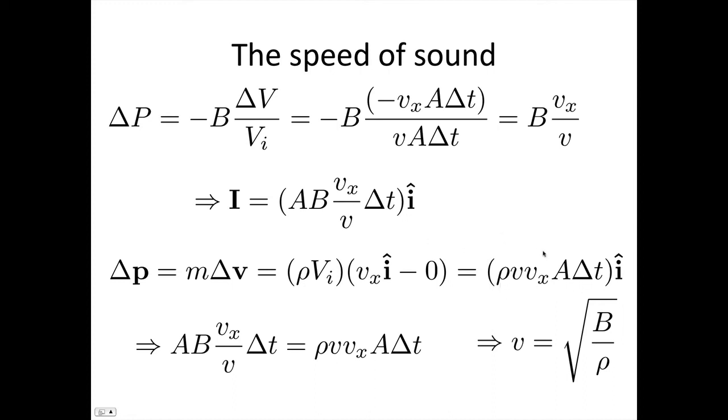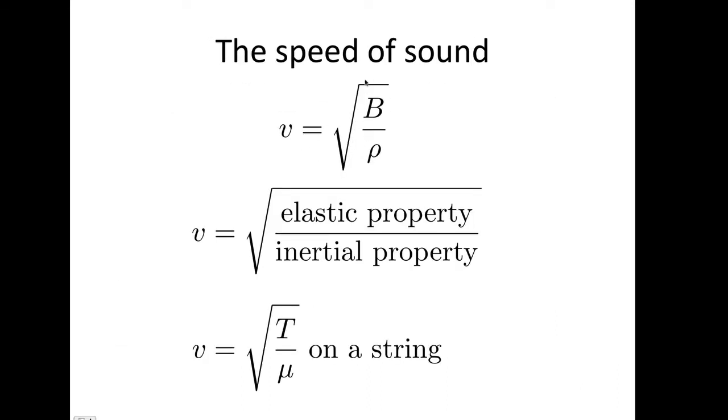So now what we can do is just equate these two because of impulse. So we've got AB Vx on V delta T is equal to rho V Vx A delta T. Almost all of it cancels out, the delta T's, the Vx's, the A's. And we end up with V, the velocity of the sound in the medium, is equal to the square root of the Young's modulus, the bulk modulus over the density. So V is equal to the square root of the bulk modulus over the density.